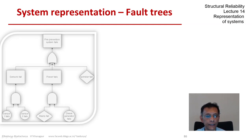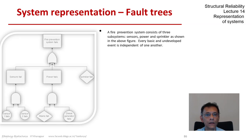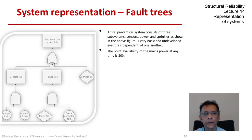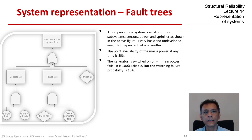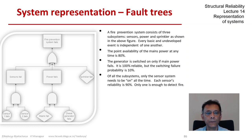Let's put some numbers. The point availability of the mains is 80%, meaning that at any given time the system has an 80% chance of being up and a 20% chance of not being up. The generator itself is 100% reliable, but there is a switch failure issue with a 10% probability. The sensor subsystem needs to be on all the time, and each sensor has a reliability of 90%. We are not talking about the batteries separately at this time.